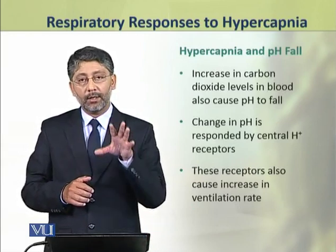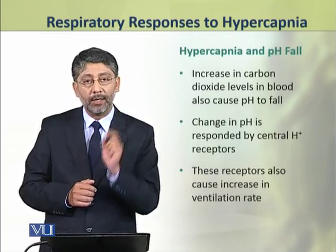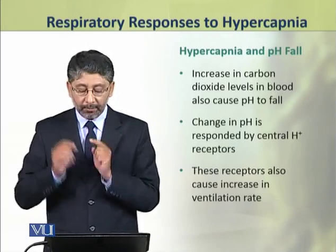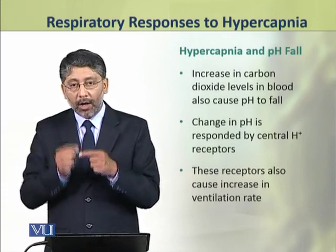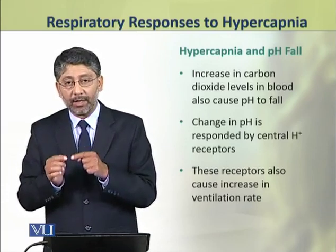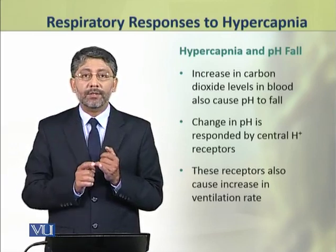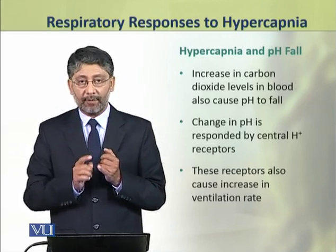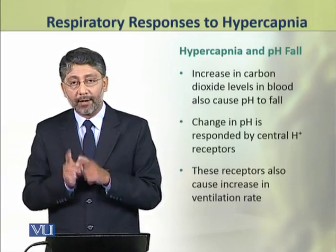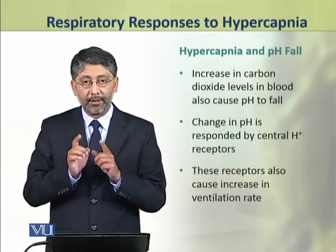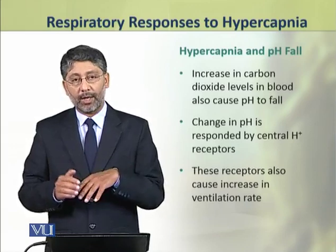The increase in the concentration of carbon dioxide in blood results in a fall of the pH level of the blood. The changes in pH level of blood are responded to by the central hydrogen ion receptors.